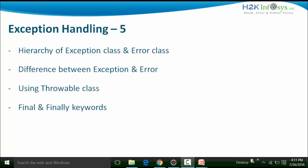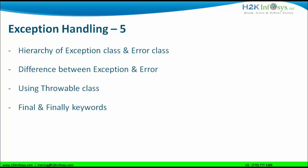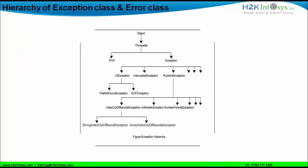Let us first understand the hierarchy of the exception class and error class by looking at this particular diagram. The object class is considered as the super class in Java and is at the highest hierarchy. The object class is inherited by the throwable class, whose hierarchy is one step below the object class. The throwable class is then inherited by two other classes: the error class and the exception class.